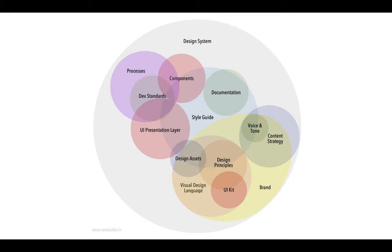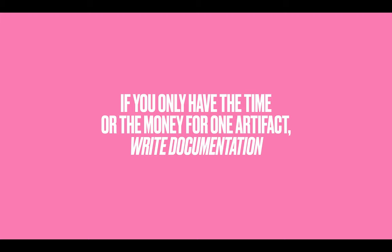Coming back to this picture — there are a lot of artifacts here. What do you think is the most important one? If you come from a design background, you're going to tend towards the UI presentation layer, the components, or the UI kit. If you're a product person, you're going to be drawn to processes. If you come from a brand background, content strategy and the visual design language will stick out. If you're a developer, dev standards is a big one. So which one's the biggest, the most important? If you only have the time or the money to do one thing and do it well, what should it be?